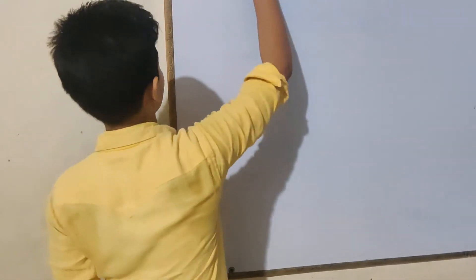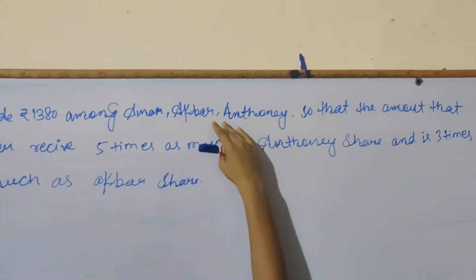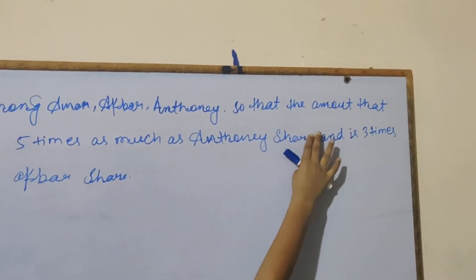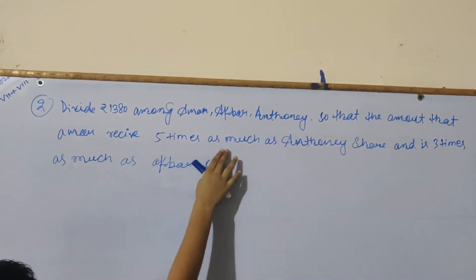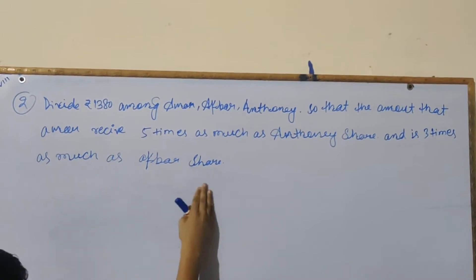Next question. Question number 2: Divide rupees 1380 among Amar, Akbar and Anthony, so that Amar receives 5 times as much as Anthony's share and 3 times as much as Akbar's share.